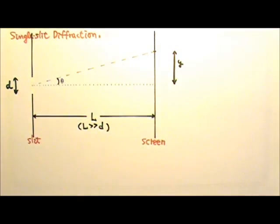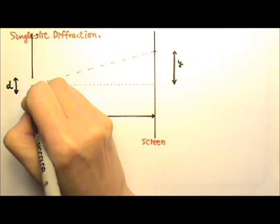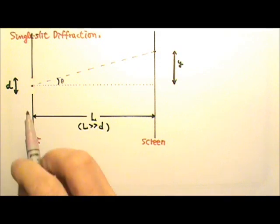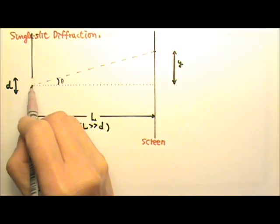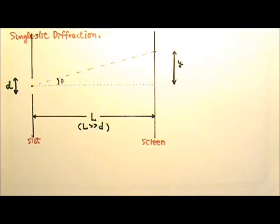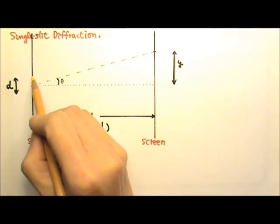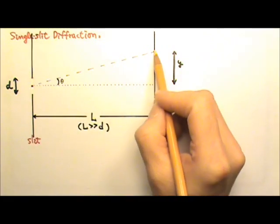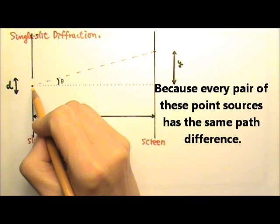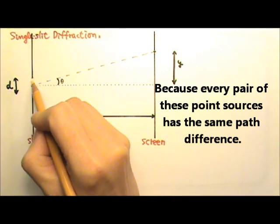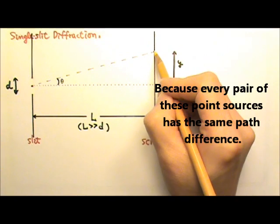Let's say we are looking at one particular wave source paired with another. The distance between this pair would be half D. If these two wave sources provide wavelets that give us destructive interference, then the next pair would also give us destructive interference — and the next pair the same — which means on the screen we would get a dark fringe.